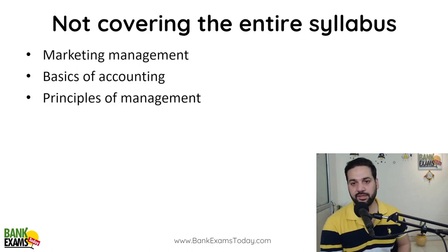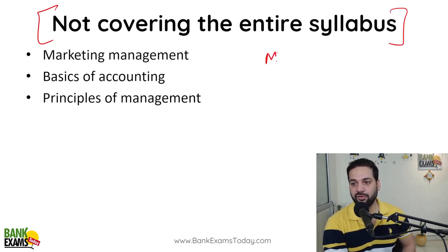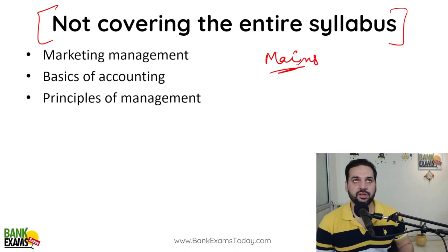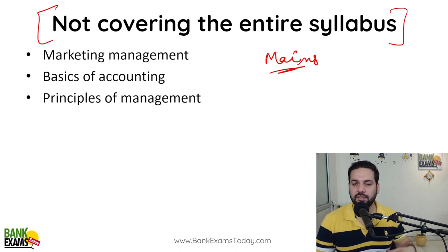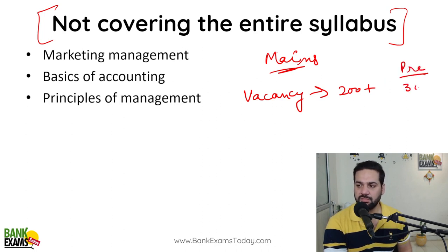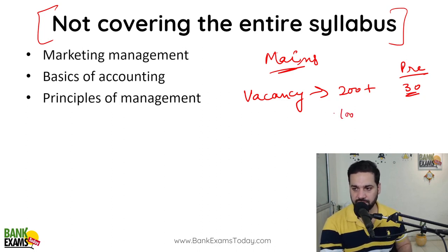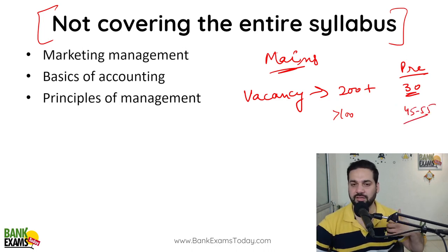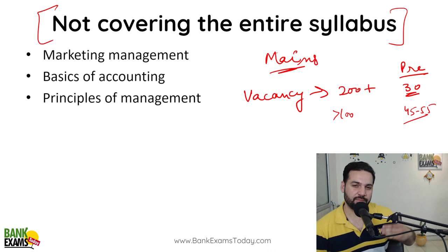The first common mistake is that students are not covering the entire syllabus, especially for the main exam. The cutoff for the prelims is around 26 to 30. If the vacancy number is more than 200, the prelims cutoff would be less than 30 — around 30. If the vacancy is less than 100, the cutoff can be between 45 to 55. That is the thumb rule I have noticed over many years.